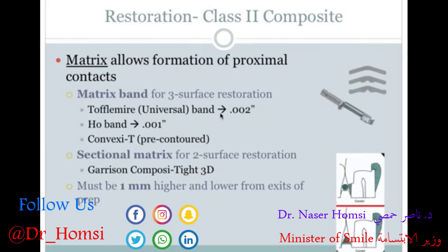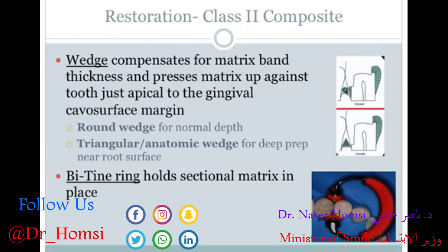Once a sidewall of tooth has been cleared, we need a matrix and a wedge to restore it to proper contour. The matrix — in this case the Tofflemire band, which is metal — is bent around the side of the tooth to form a template for the restorative material to shape against. A wedge is then placed between the tooth you're working on and the adjacent tooth to very slightly separate the two teeth via the periodontal ligament, so that when the matrix and wedge are removed there's no open space left where the band was.